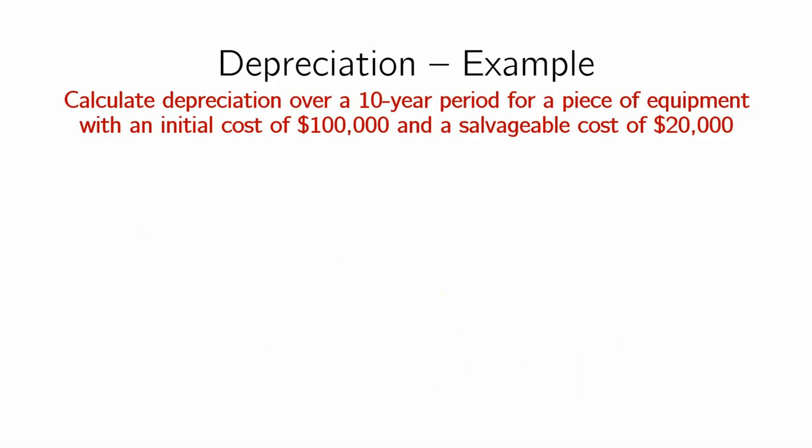So let's look at an example and see how this works. Let's say you have a 10-year period for a piece of equipment, so you determine that this piece of equipment can only operate for 10 years, you estimate that, and that it costs you $100,000, but it has a salvageable cost of $20,000. And you want to know how you can take depreciation out of your income and understand basically your net profitability from this.